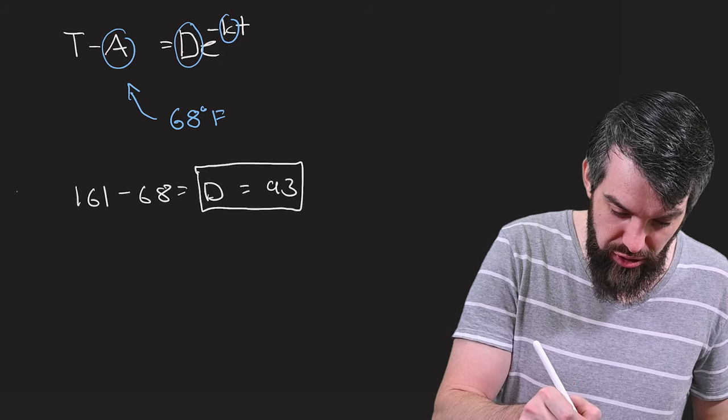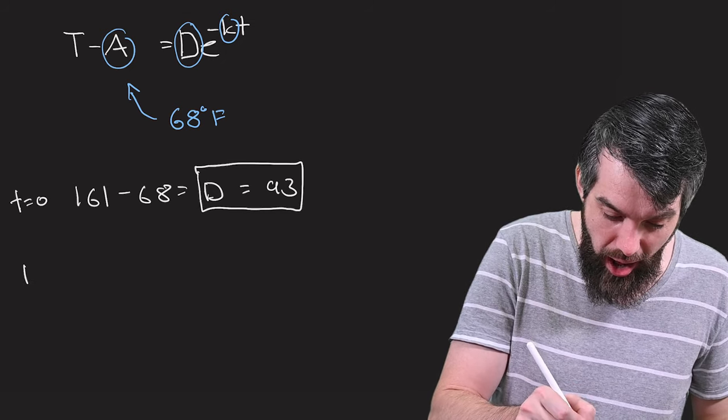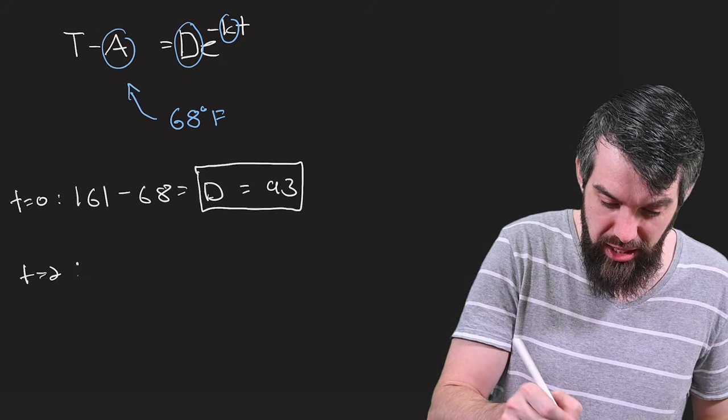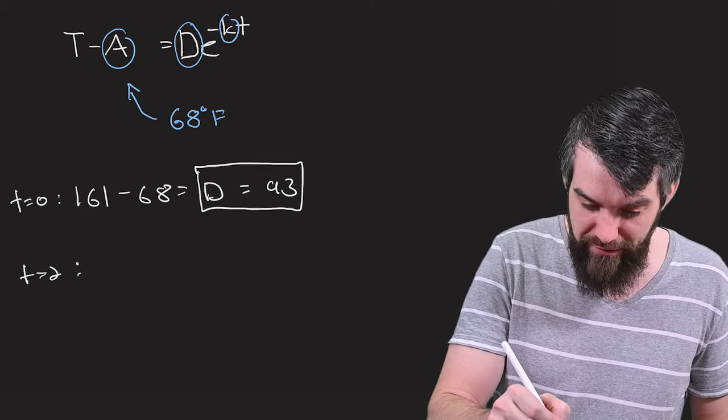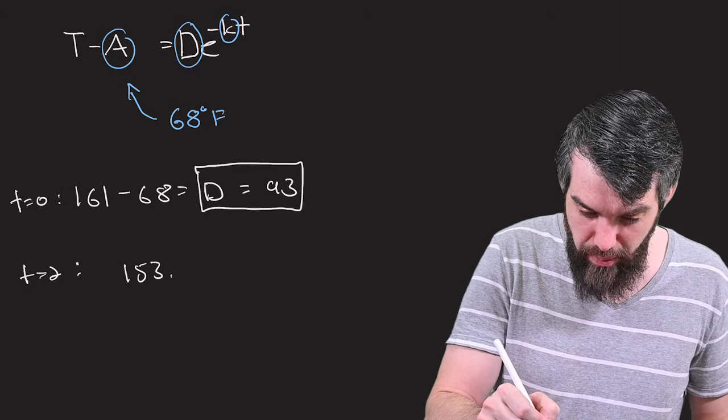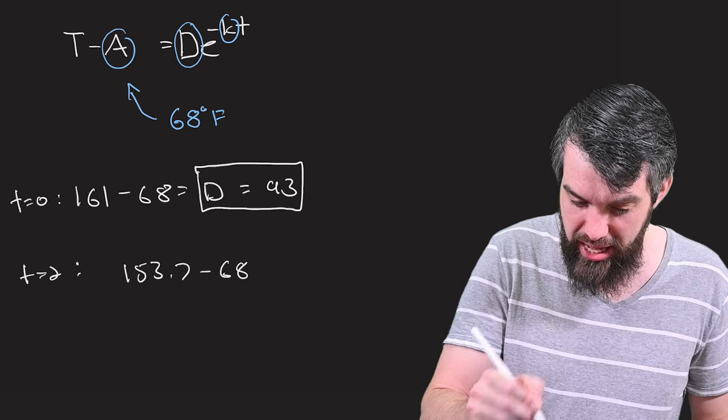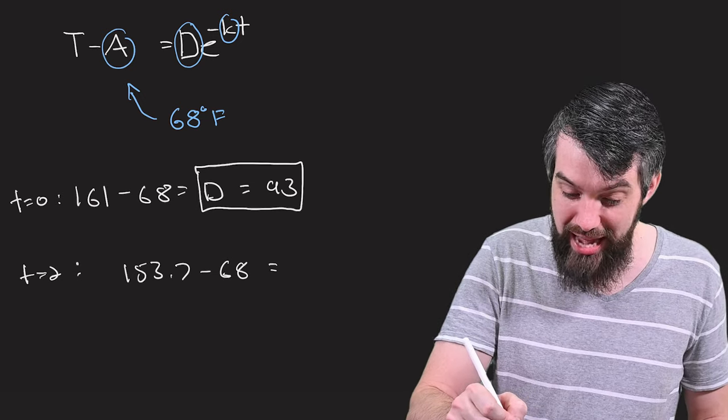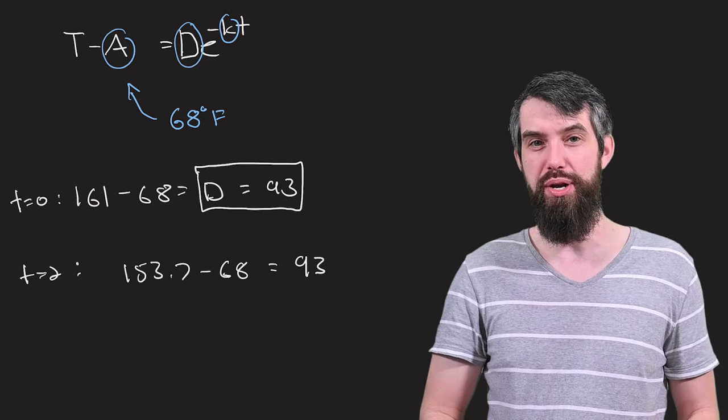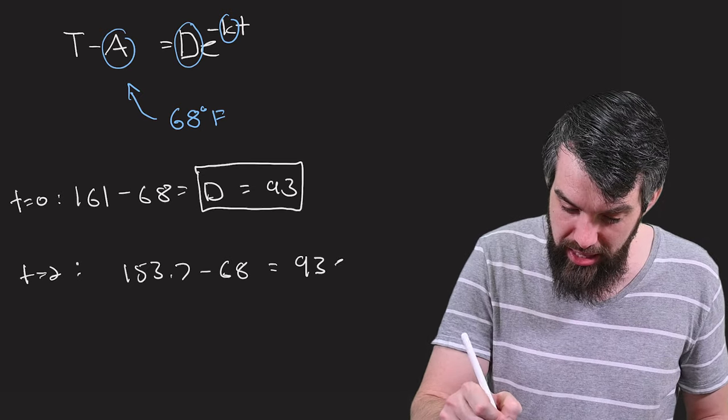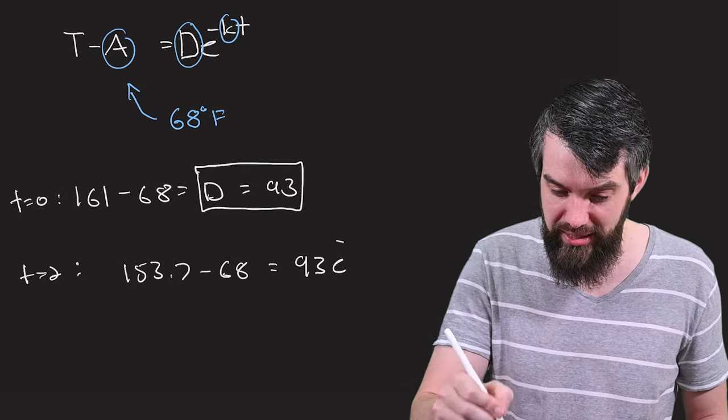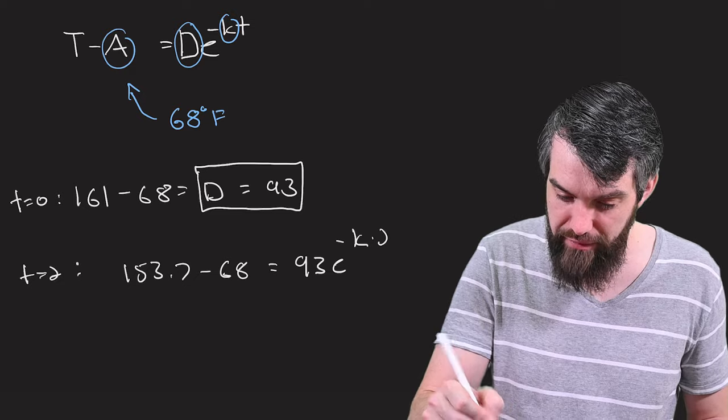Well, let's now try to do that. If this first computation was done at t equal to 0, I'll now do a computation at t equal to 2. What do I get? On the left is 153.7 minus the 68. And then on the right, I now know the value of D, so I can put it in, the 93. And then it's going to be E to the minus K times the value of 2.